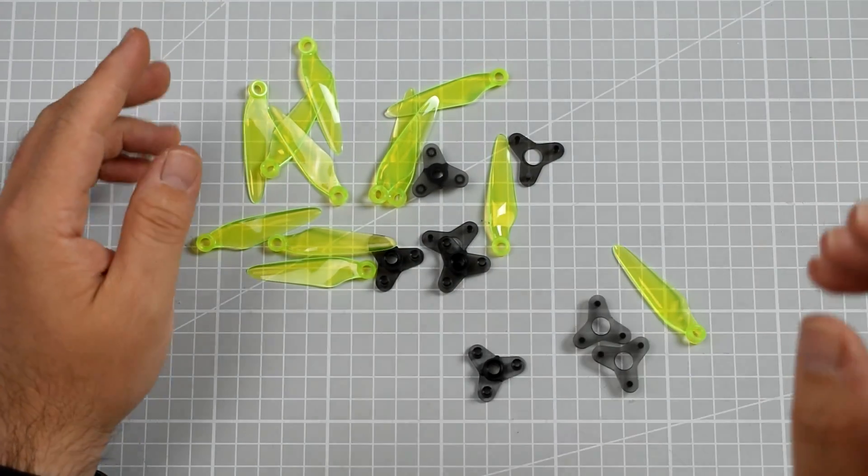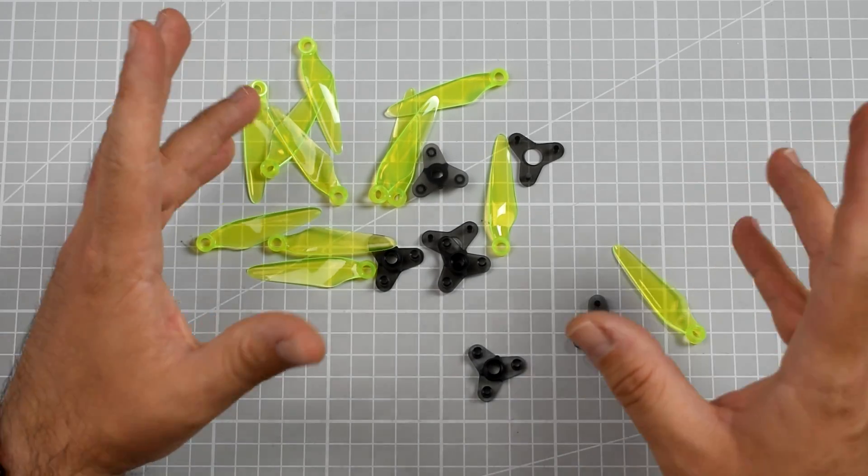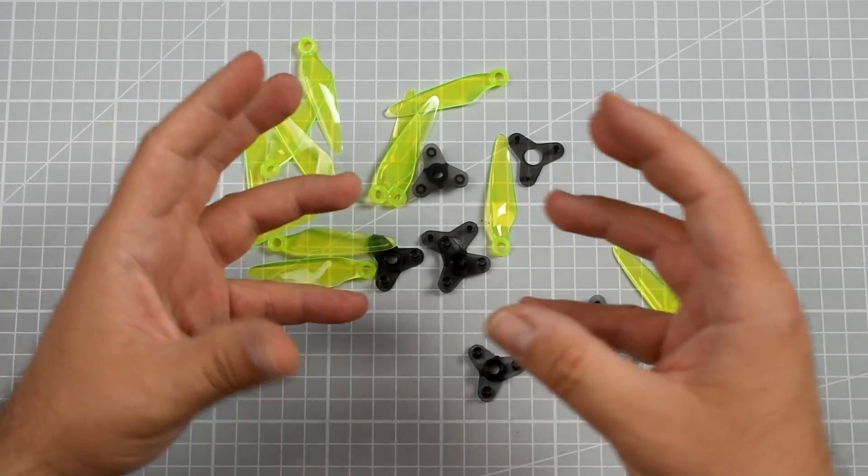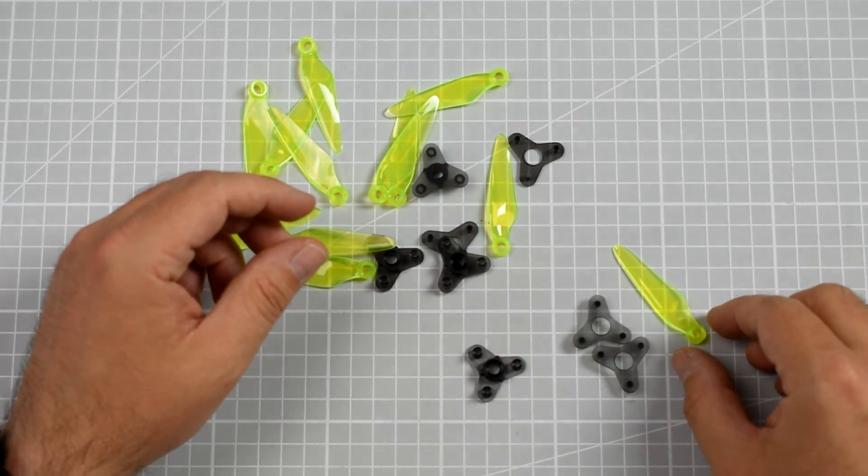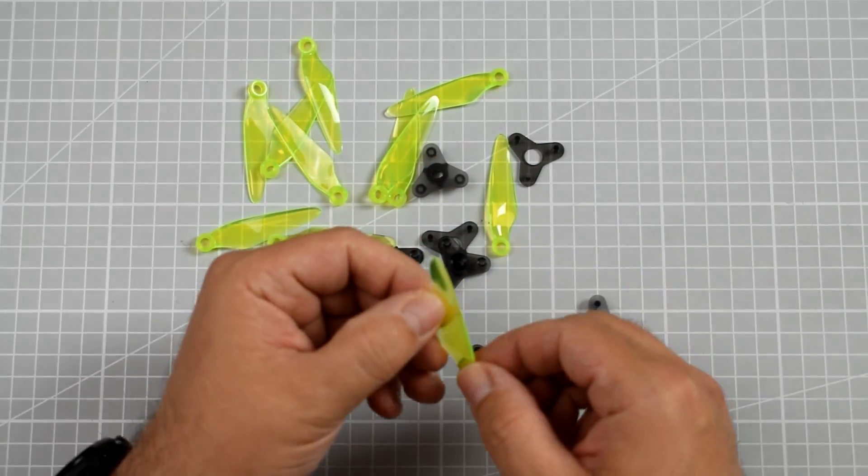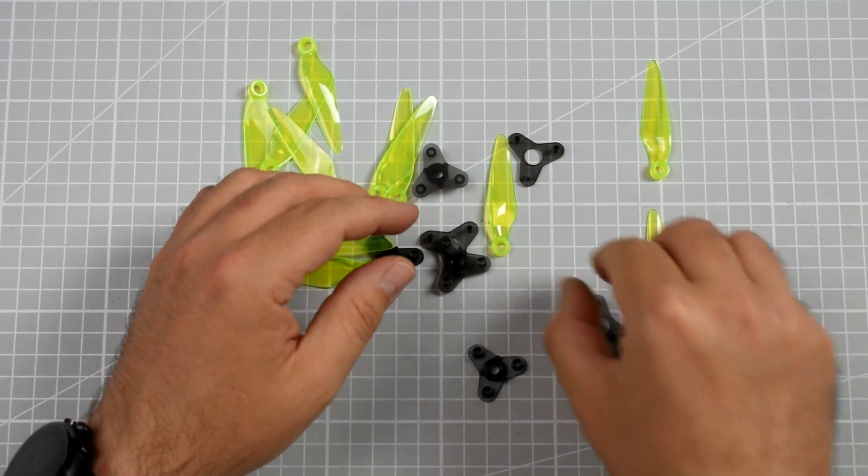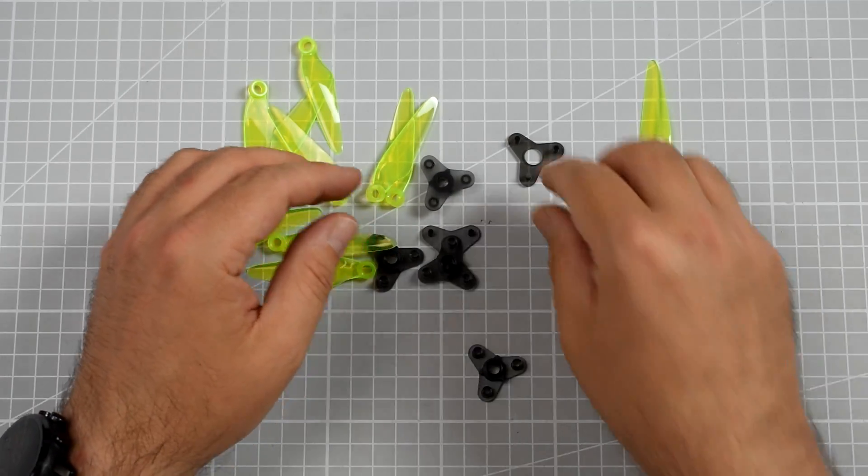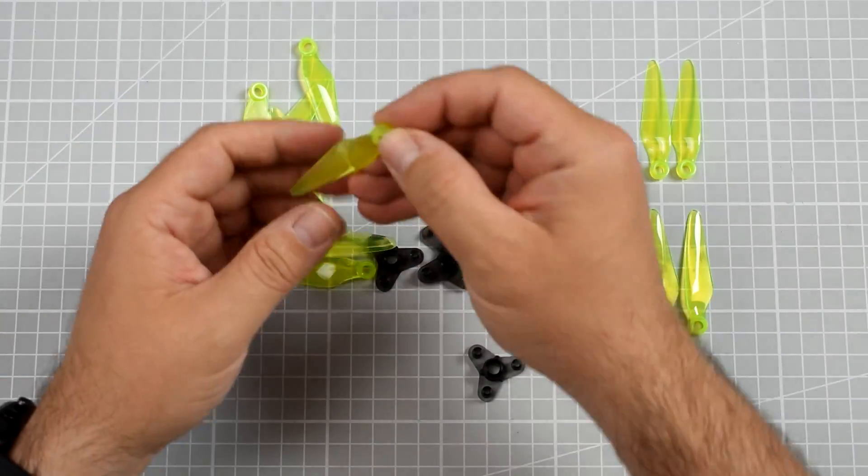It's simple. The key is the methodology, because if you will not go with the methodology, you might end up with a wrongly assembled propeller that you will have a problem to open. So first, let's divide the blades into two sets - one will be counter-rotating and the second one will be clockwise.